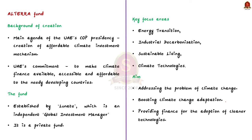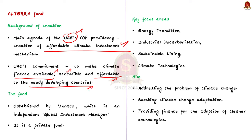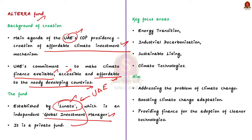The UAE is currently holding the COP presidency. One of the main agendas of the UAE's presidency is to create an affordable climate investment mechanism, and the UAE is committed to making climate finance easily available, accessible, and affordable to needy developing countries. Based on these goals, the UAE launched the Alterra fund. Note that the Alterra fund has been established by Lunate, an independent global investment management company located in Abu Dhabi. Despite being announced by the UAE government, it is a private fund.